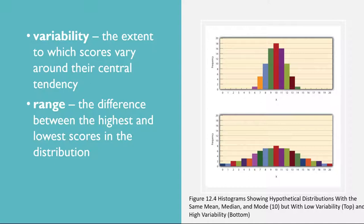One simple measure of variability is the range, which is simply the difference between the highest and lowest scores in the distribution. The range of the self-esteem scores in table 12.1, for example, is the difference between the highest score, 24, and the lowest score, 15. That is, the range is 24 minus 15, which equals 9. Although the range is easy to compute and understand, it can be misleading when there are outliers. Imagine an exam on which all the students scored between 90 and 100 — it has a range of 10. But if there was one single student who scored 20, the range would increase from 10 to 80, giving the impression that the scores were quite variable when in fact only one student differed substantially from the rest.